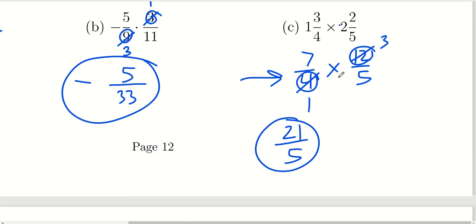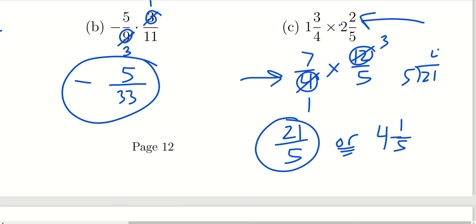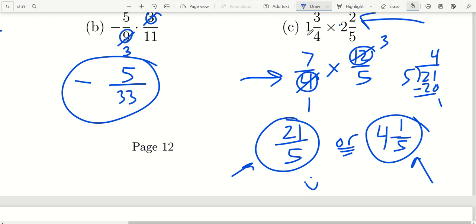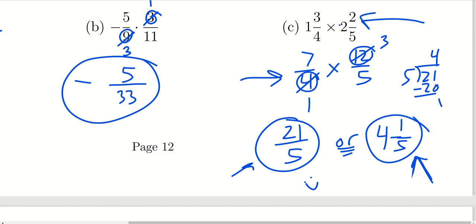For most questions, I don't care whether you put the answer in improper form or mixed number form — it's up to you. However, some people argue that since the question started with mixed numbers, it makes sense to express the answer as a mixed number too, which would be 4 and 1 fifth. Five goes into 21 four times with a remainder of 1. Either 21 over 5 or 4 and 1 fifth would be acceptable. In applied or real-world problems, mixed numbers are often preferred over improper fractions.